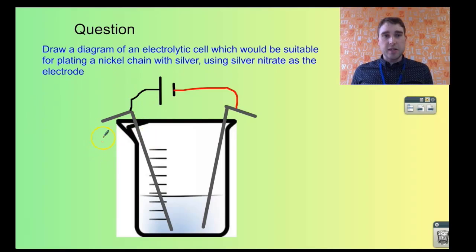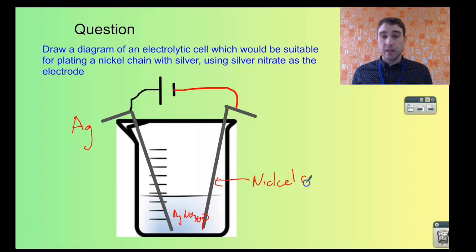I'm going to start on this side. This is going to be a silver rod. I'm going to pop that in the solution. Down here, we've got silver nitrate AgNO3 solution, aqueous. So down here, we've got silver nitrate. That means this is going to be my nickel chain. It doesn't look much like a chain, but you get the idea.